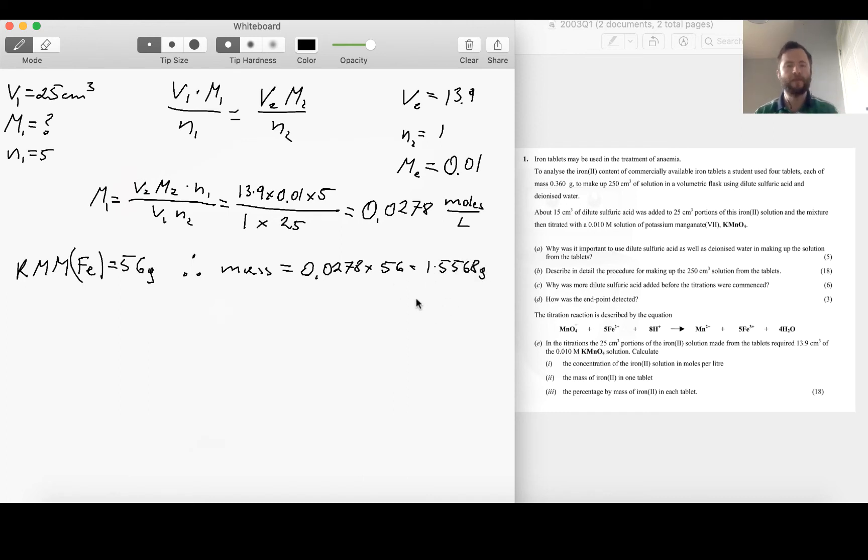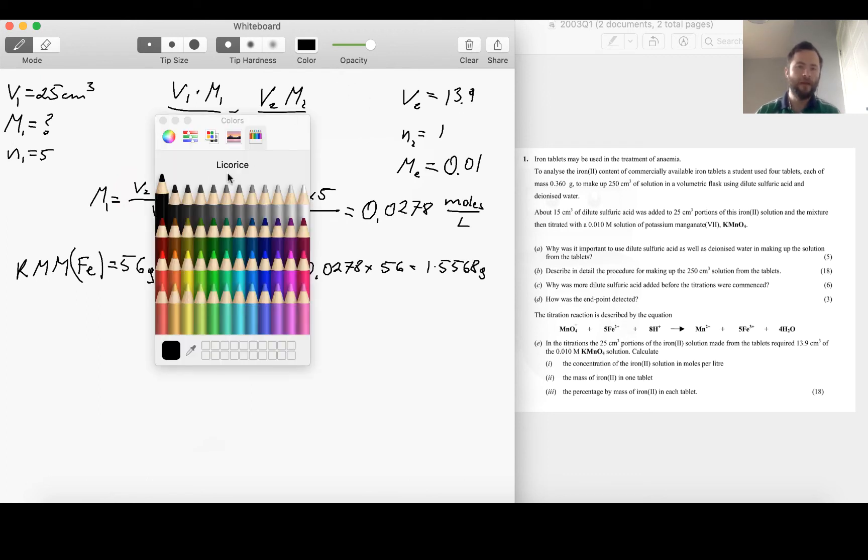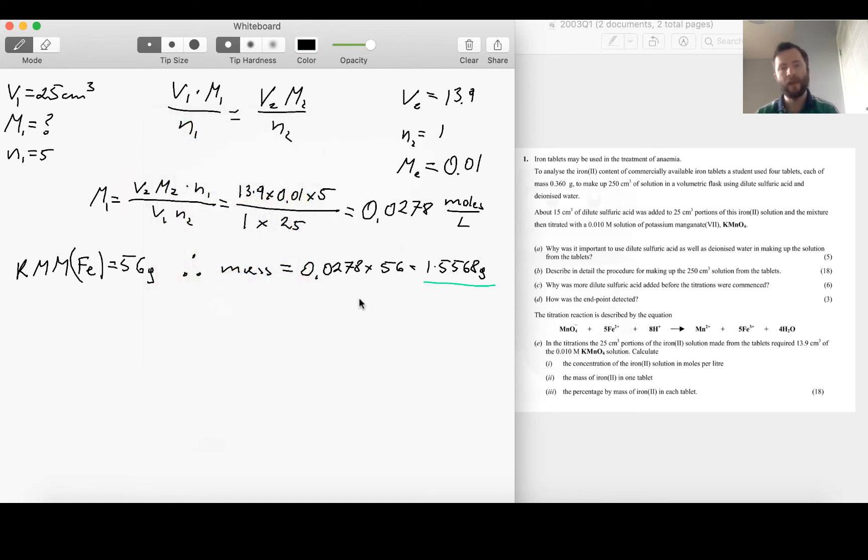So now if this solution was made out of pure iron, the amount of pure iron that we would require to form the solution would be 1.5568 grams. But obviously it's not made out of pure iron, it's made out of iron tablets, and we know that we require 4 tablets.